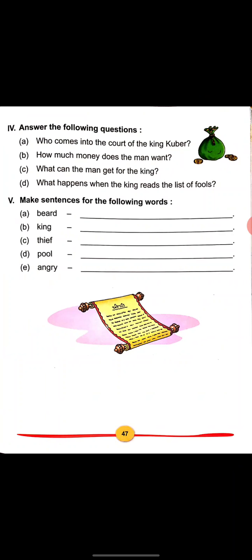And last one is, make sentence for the following words. There are some words and you have to make the sentence. Beard - He has a white-beard king. King - The lion is a king of jungle. Thief - He is a thief. Pool - I swim in a big pool. Angry - My father is an angry man.